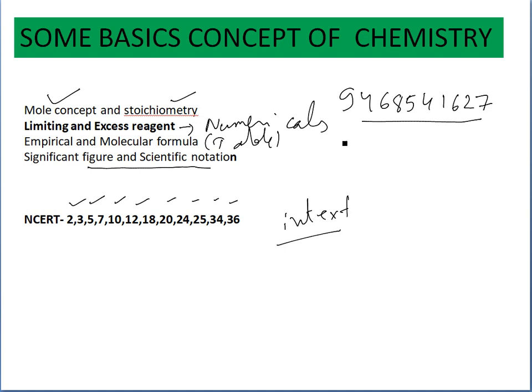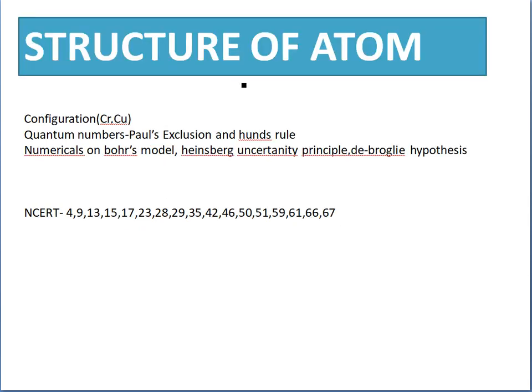These are the first chapter topics. Let's move to second chapter, the structure of atom. It is a big chapter. First of all, you have to learn the structure of atom, that is electronic configuration. These are the exception cases, these are asked again and again in the exam.